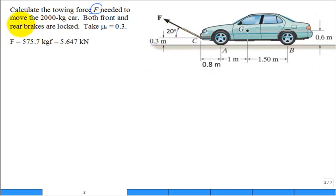It's needed to move the 2000 kilogram car. When you're given the mass of a car, you multiply by g to get the weight, and you look for the symbol for the center of gravity where the weight would be applied for the car. Both the front and rear brakes are locked.